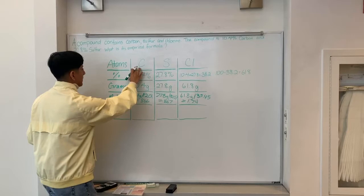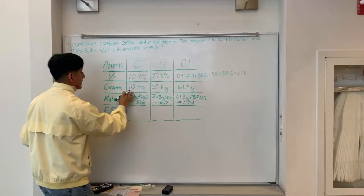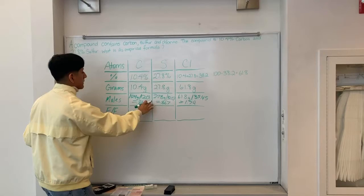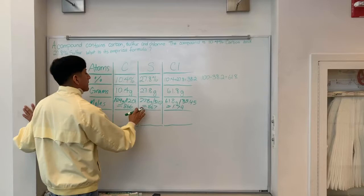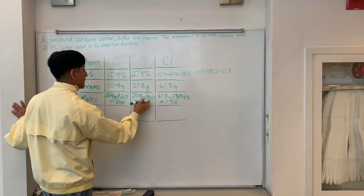To find the moles of carbon, we get 0.866. For sulfur, we take 27.8 grams and divide by 32.07, which gives 0.867.